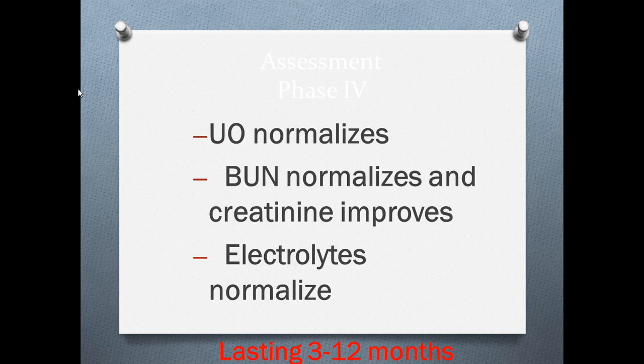Assessment for phase four: urinary output normalizes, BUN normalizes, creatinine improves but doesn't return to normal, and electrolytes normalize. This phase can last three to twelve months. Phase two can last up to two months, phase three up to two months, and phase four three to twelve months. Once patients reach phase four they are usually discharged from an acute care facility.